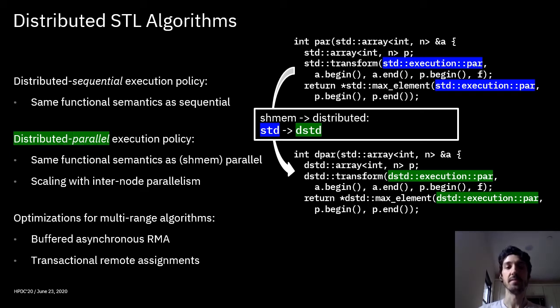This in some sense guarantees the functional semantics, the sequential semantics, through the operational semantics going actually sequentially through the portions. Then we introduce the distributed parallel execution policy that has the same functional semantics as the shared memory parallel execution policy, but this time operationally it still splits the range into multiple portions, but this time it goes independently, applies independently the algorithm over each portion, and then it combines the partial results into a final result. This is the very well-known map-reduce execution pattern from the classical functional programming domain.